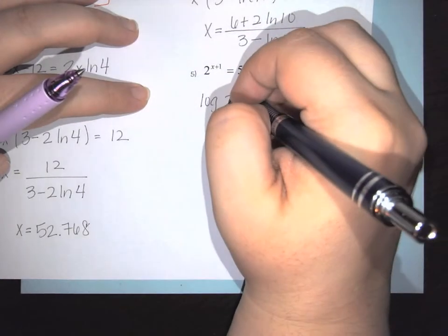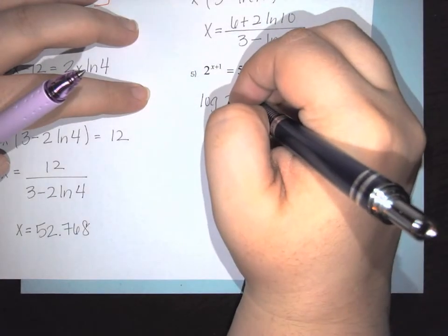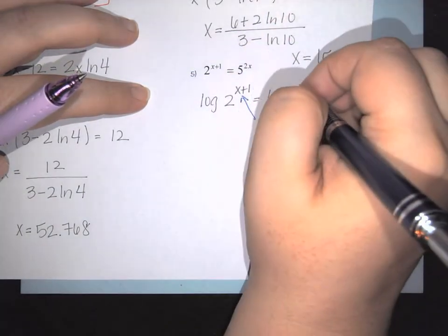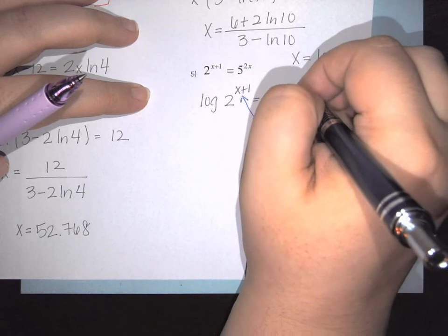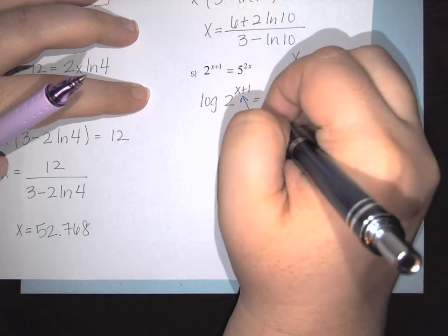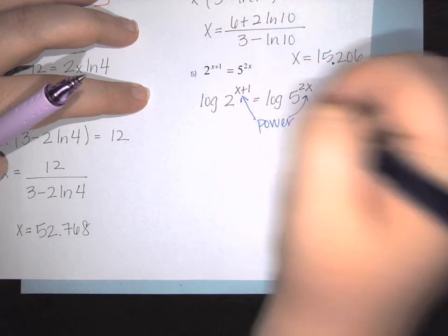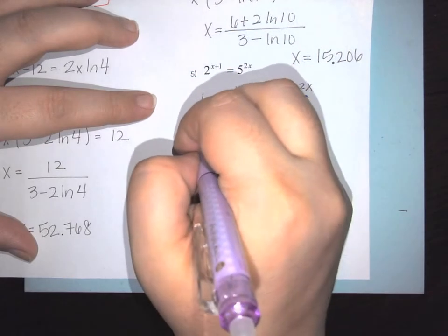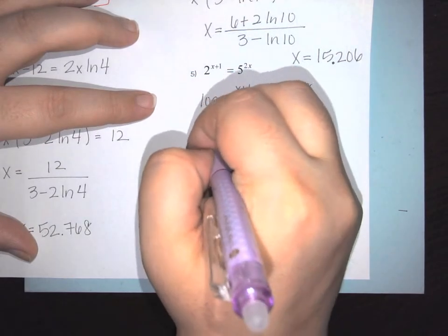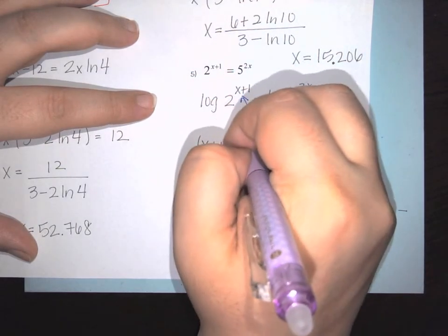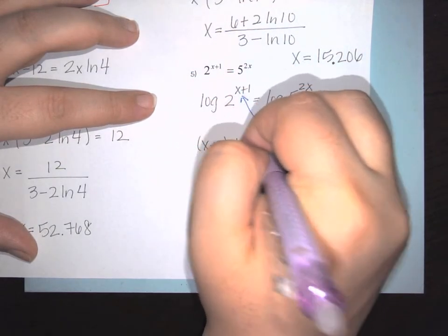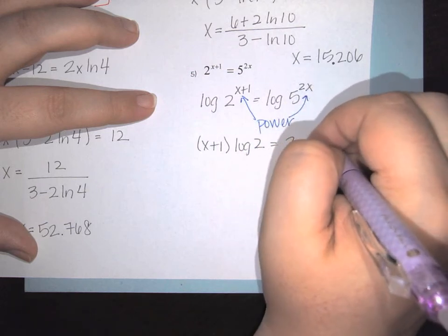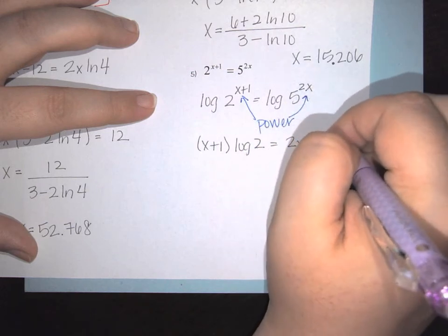With both of these, apply the power rule: (x plus 1) times log of 2 equals 2x times log of 5.